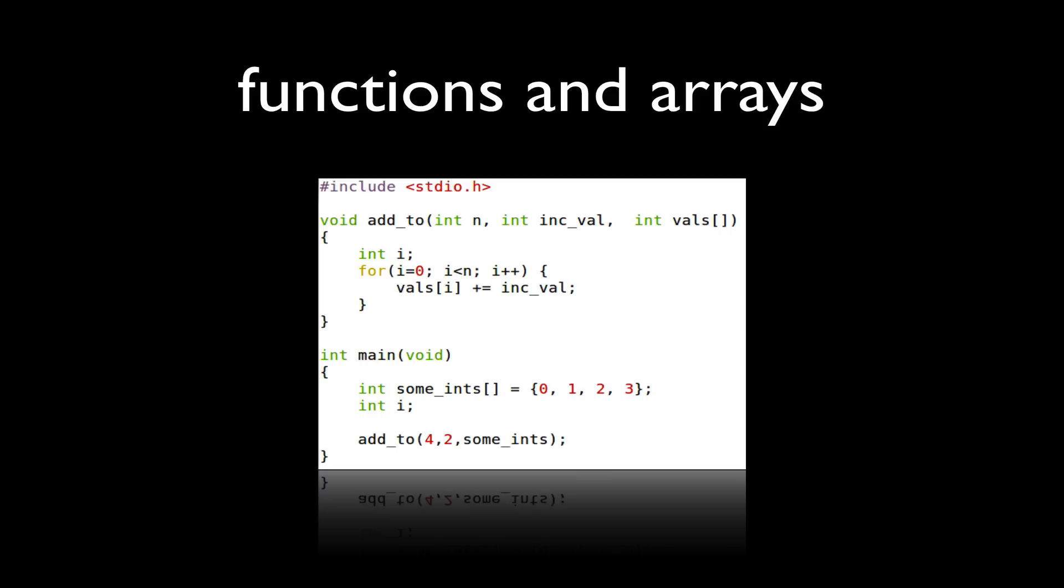In terms of calling semantics, C functions can utilize either call-by-value or call-by-reference semantics. In this particular example, the first two arguments to the addTo function get sent by value. So the argument n, which is an int, and inc_val, which is also an int, those both get sent by value.